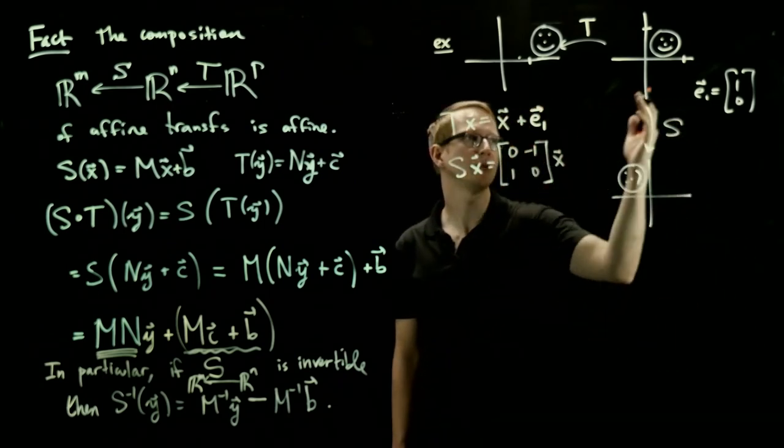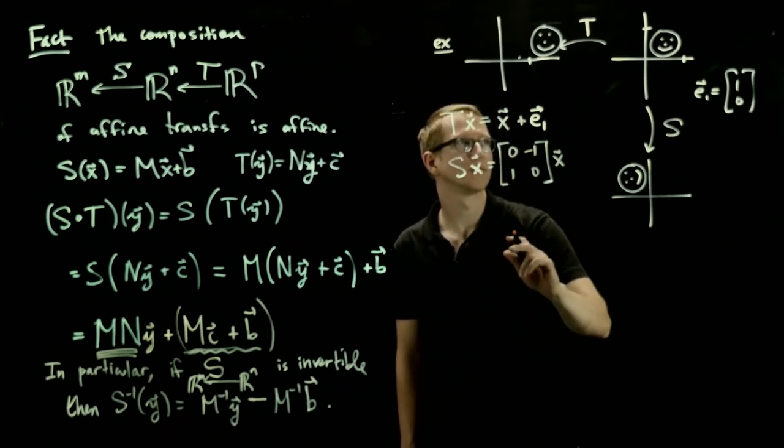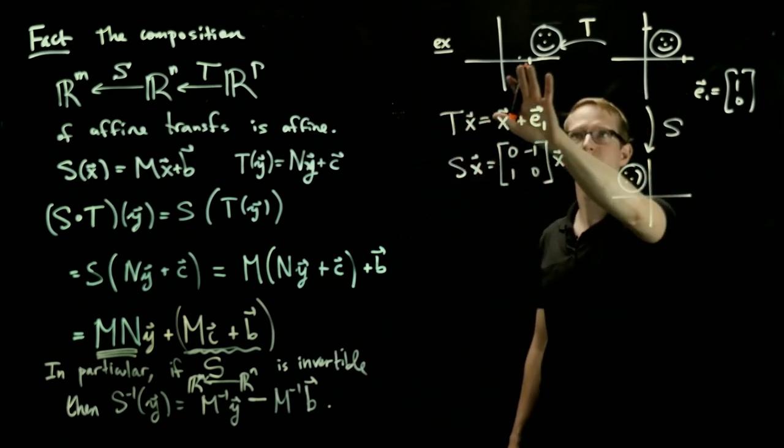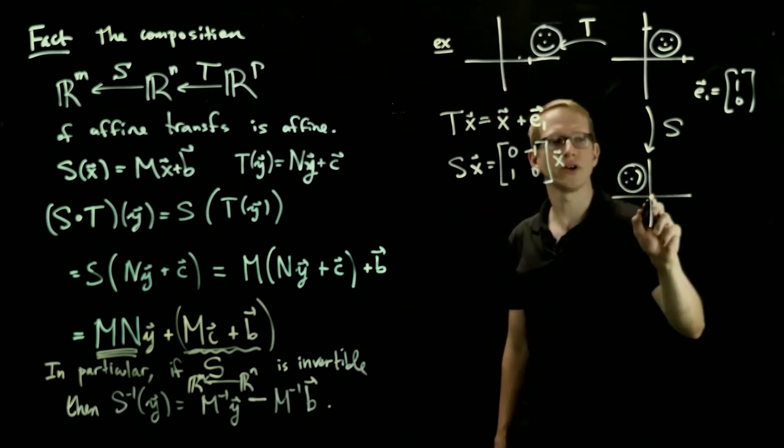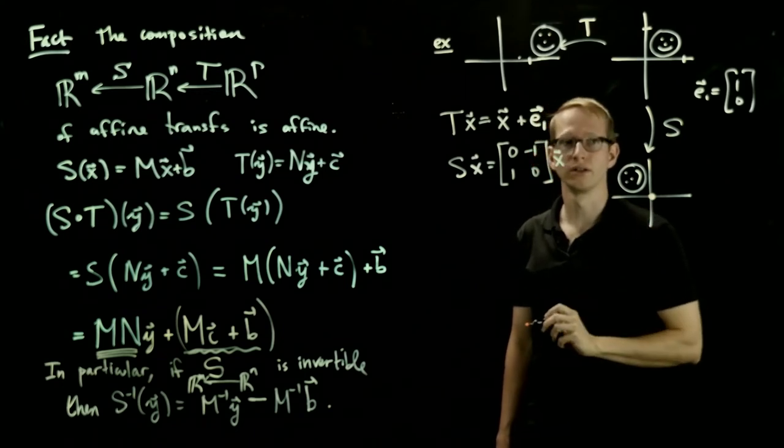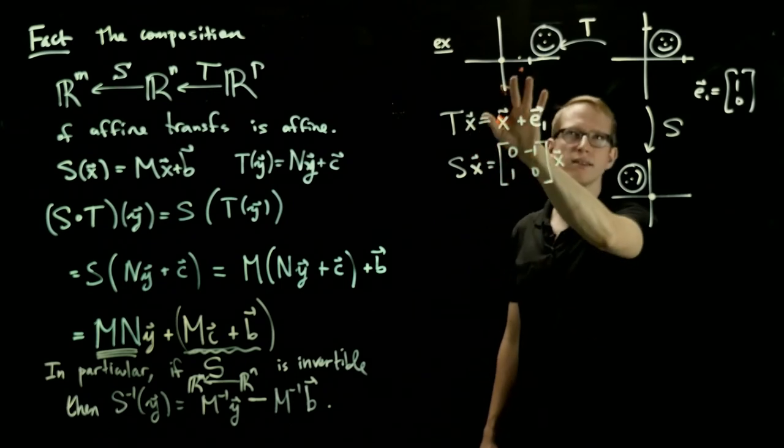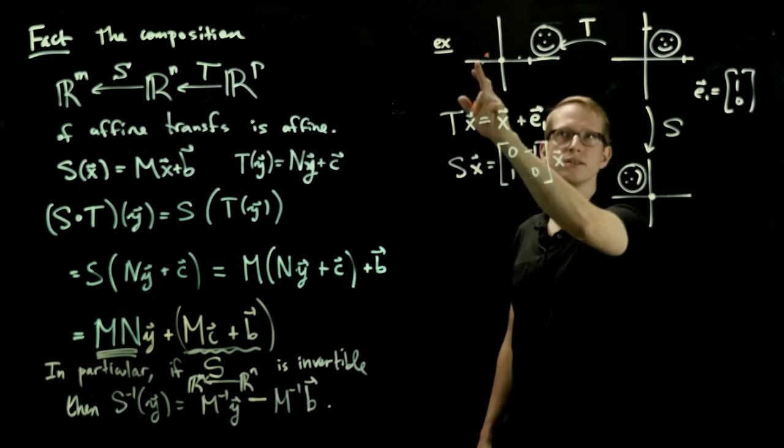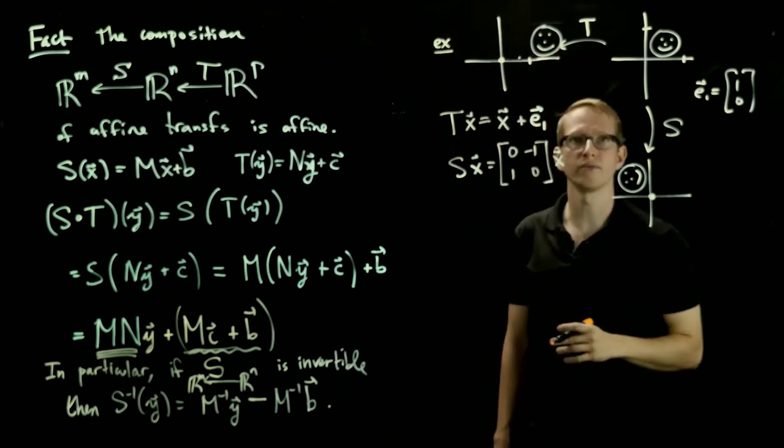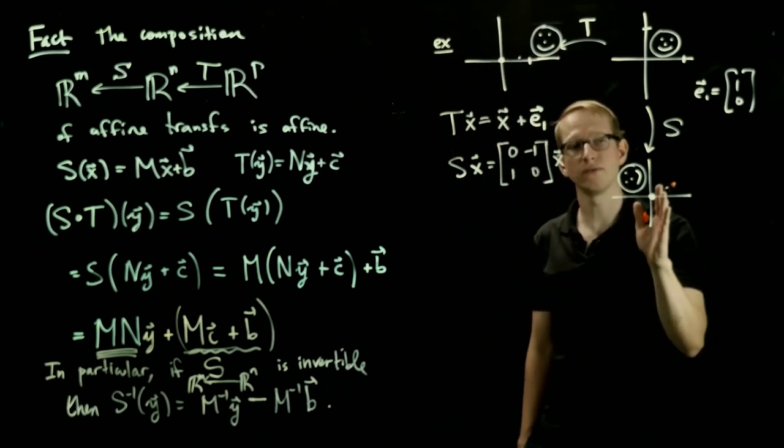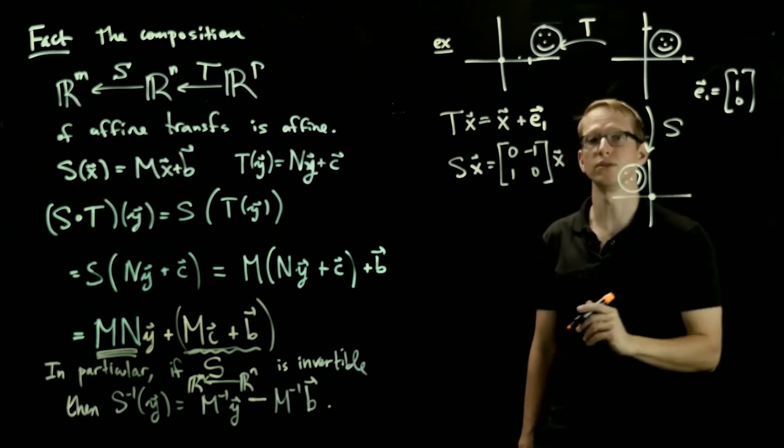So what happens when we compose these in different orders? So, let's just think about this. Imagine you translate first, and then you rotate. This rotation is occurring about the origin. So when we apply T first, and then we apply S again, we're rotating this picture by 90 degrees with respect to this origin. So this face is actually going to be further out than it would have been if we applied the rotation initially and then translated. You can already see the big difference between these two pictures.